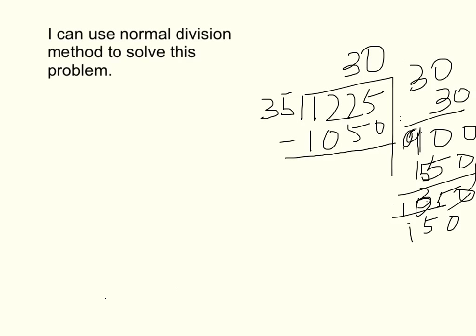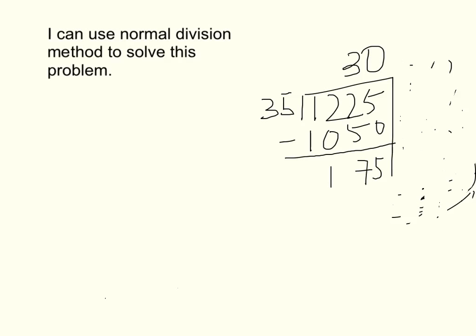As I subtract these two numbers, it equals 175. And I know that 30 multiplied by 5 is 150, and 5 multiplied by 5 is 25. So I add 150 with 25, which is 175.